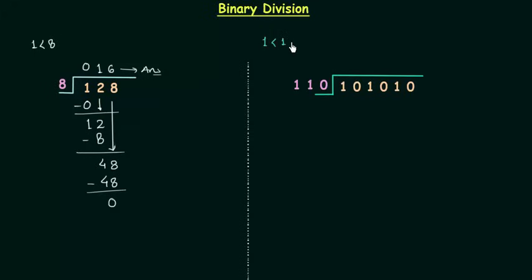1 is smaller than 110. 110 is the divisor and 1 is the left most bit of the dividend. So we have 0 as the quotient. 110 times 0 will give 0 and remainder is 1.